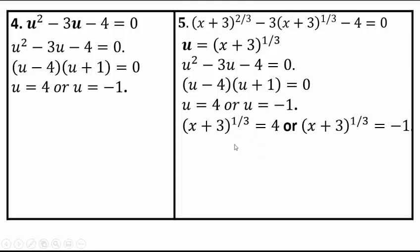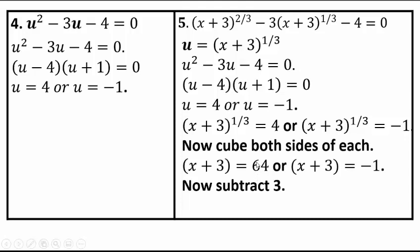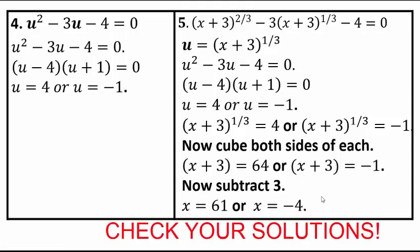So now you have a power equation: x plus 3 to the power 1 third equals 4, which is really a cube root. To undo the cube root, cube both sides. Cubing both sides gives us x plus 3 equals 64, so x equals 61. Or for the other factor, x equals negative 4. You need to go back and verify by substituting x equals 61 into the original equation: 61 plus 3 is 64, cube root of 64 is 4, 4 squared is 16, minus 3 times 4 is 12, minus 4 adds up to 0. Please check both solutions.